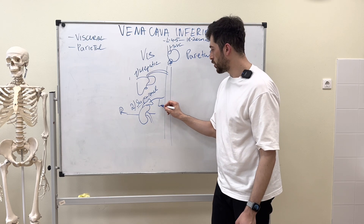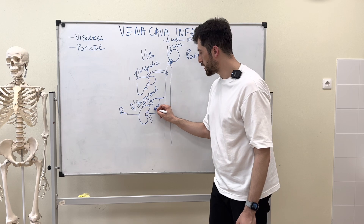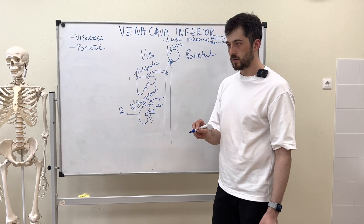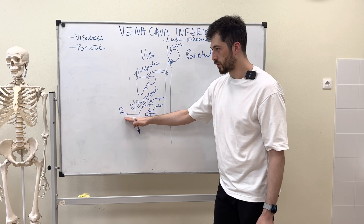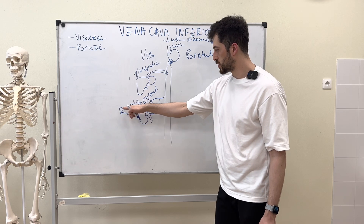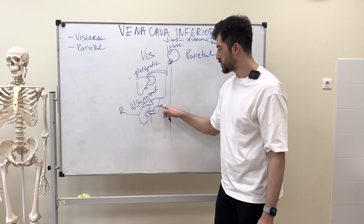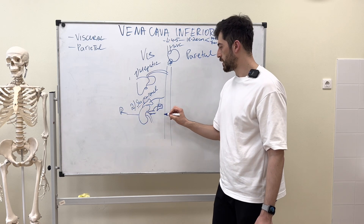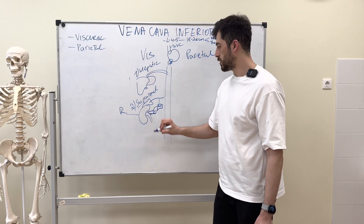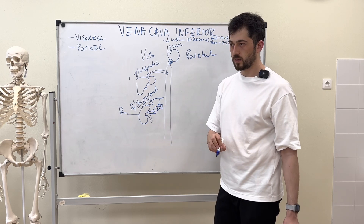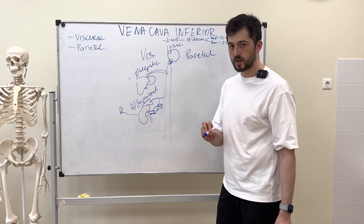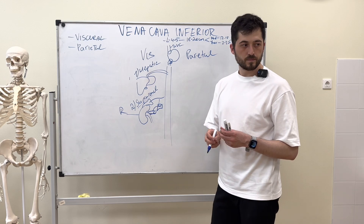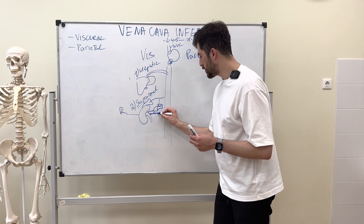The left suprarenal vein, however, drains into the left renal vein, not directly into the inferior vena cava. On the right side is the right suprarenal, and on the left side is the left suprarenal going to the renal vein.